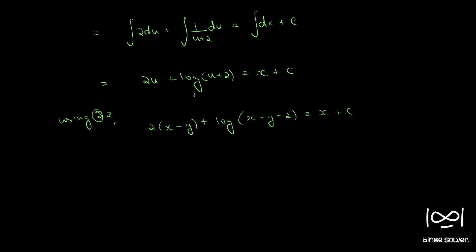So, x to the, this side, x minus x minus y plus 1 plus 8 equal to c. This is the answer given.